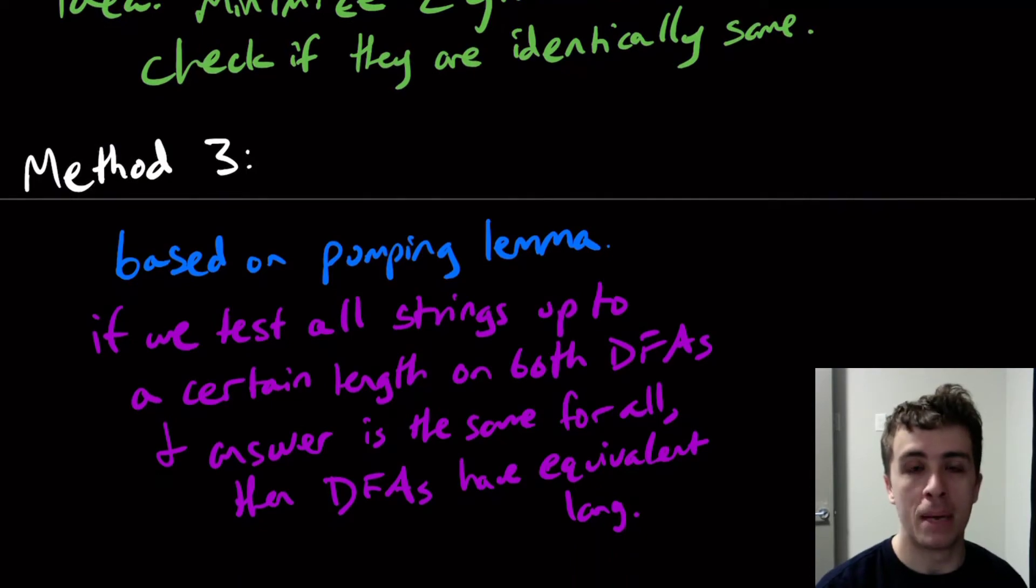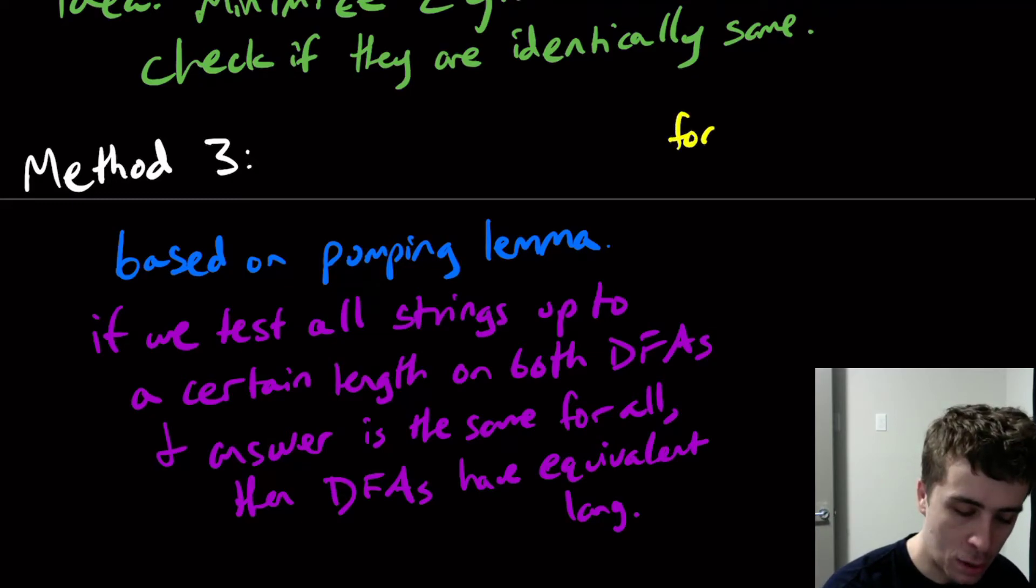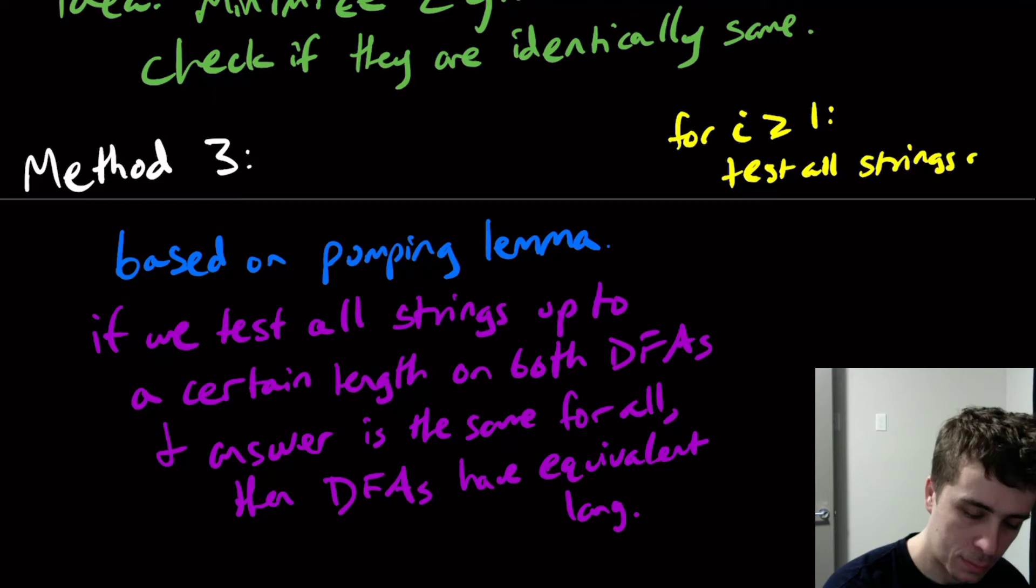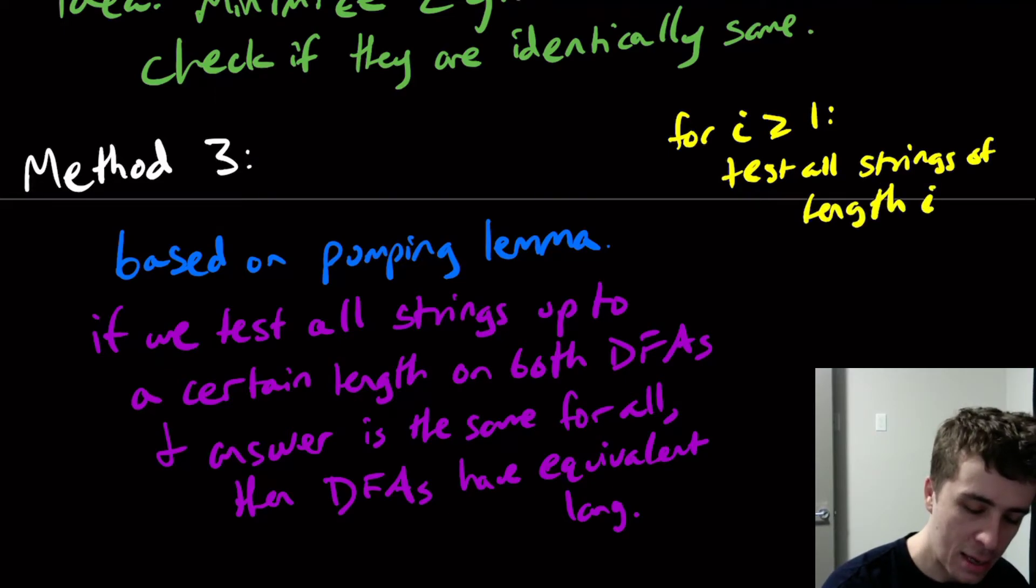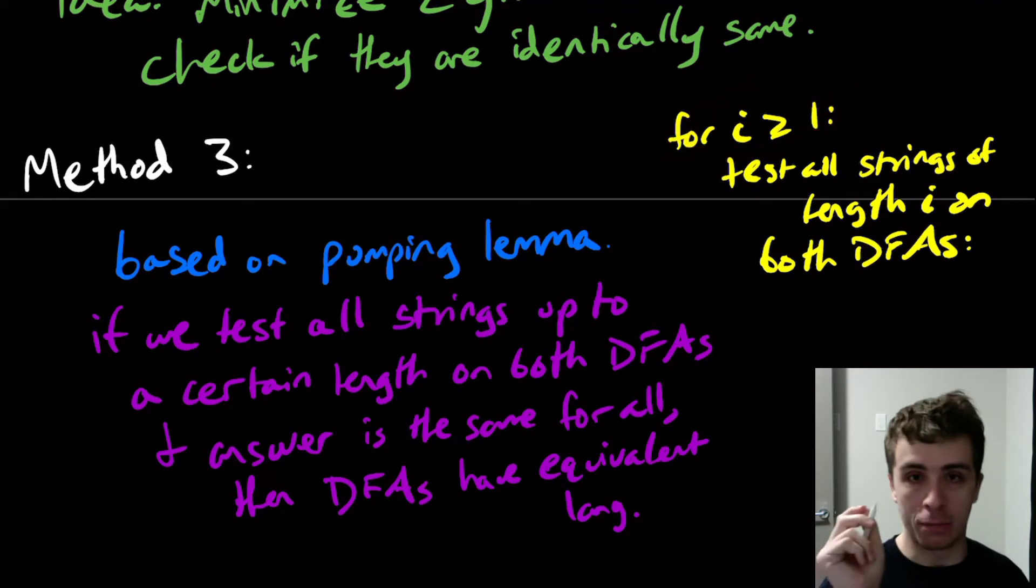I know that's a mouthful, but if we just test strings up to a certain point, then there's no reason to check any string that's longer than that. Because the naive algorithm is for i greater than or equal to one, test all strings of length i on both machines or both DFAs. If we just did that, then this method will in principle run forever because there's no stopping of this loop. So if there's a way that we can actually stop the testing up to a certain point, then we can show that the DFAs are in fact the same.